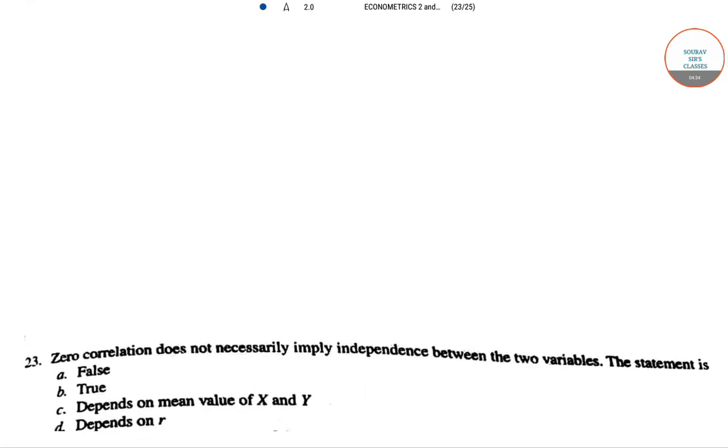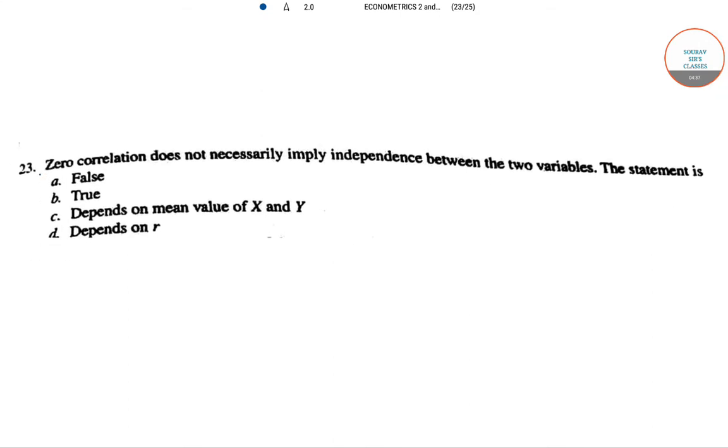Next question: zero correlation does not necessarily imply independence between two variables. This statement is true because zero correlation may occur when sum of Y = 0, sum of X = 0, or sum of XY = 0. If any of these is zero, there can be zero correlation, but it doesn't mean independence.